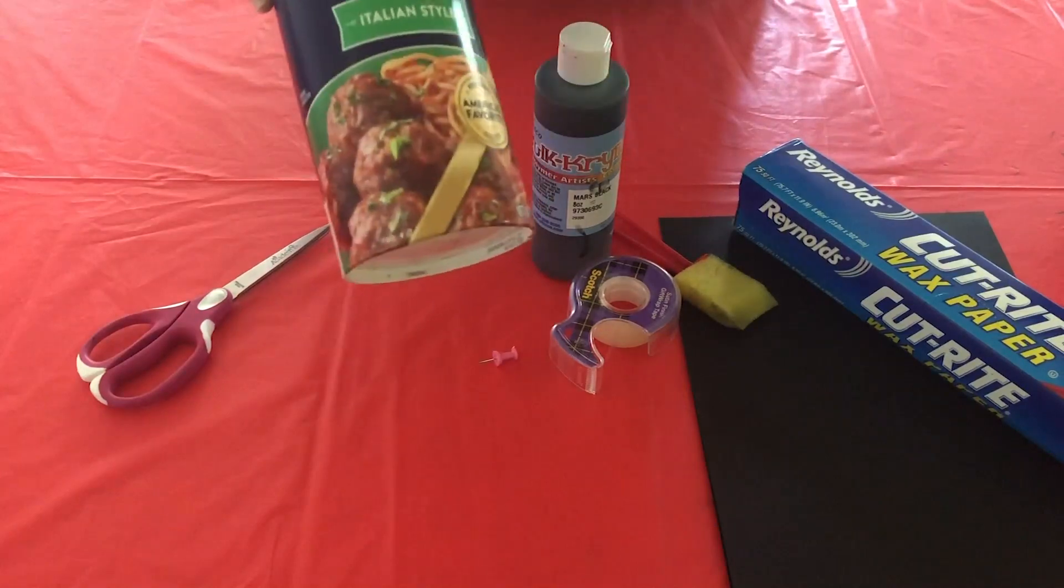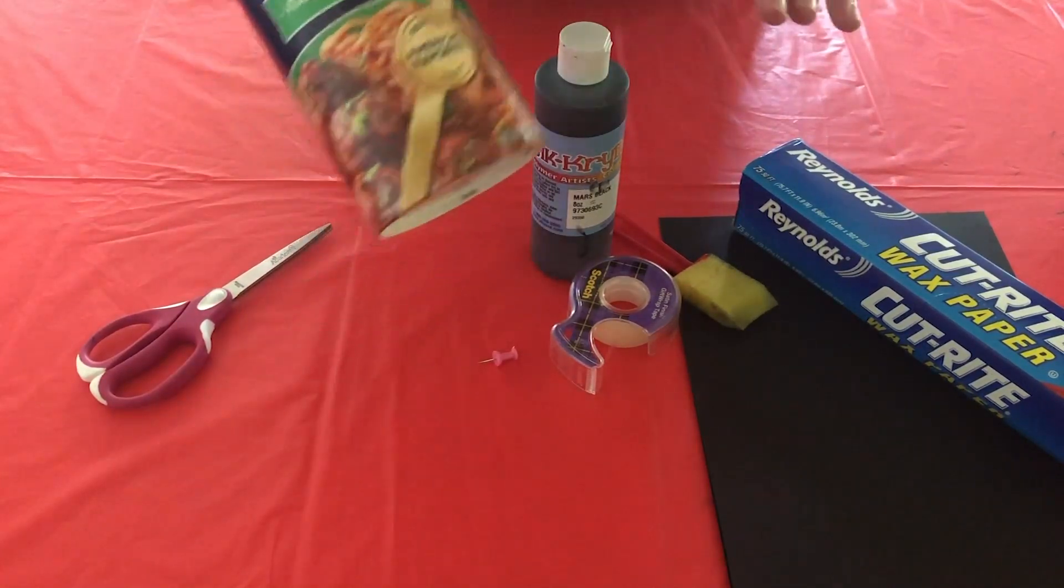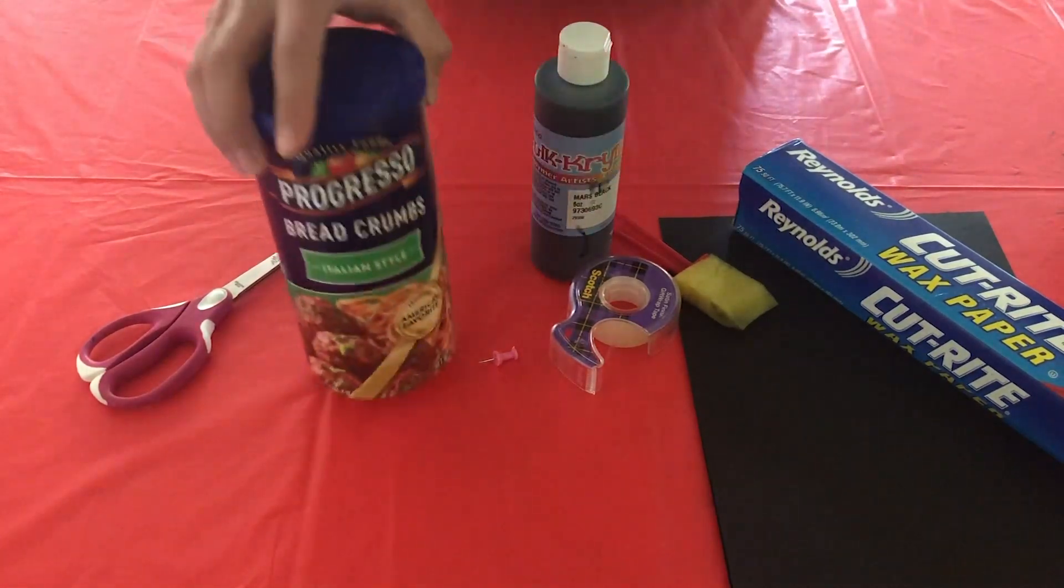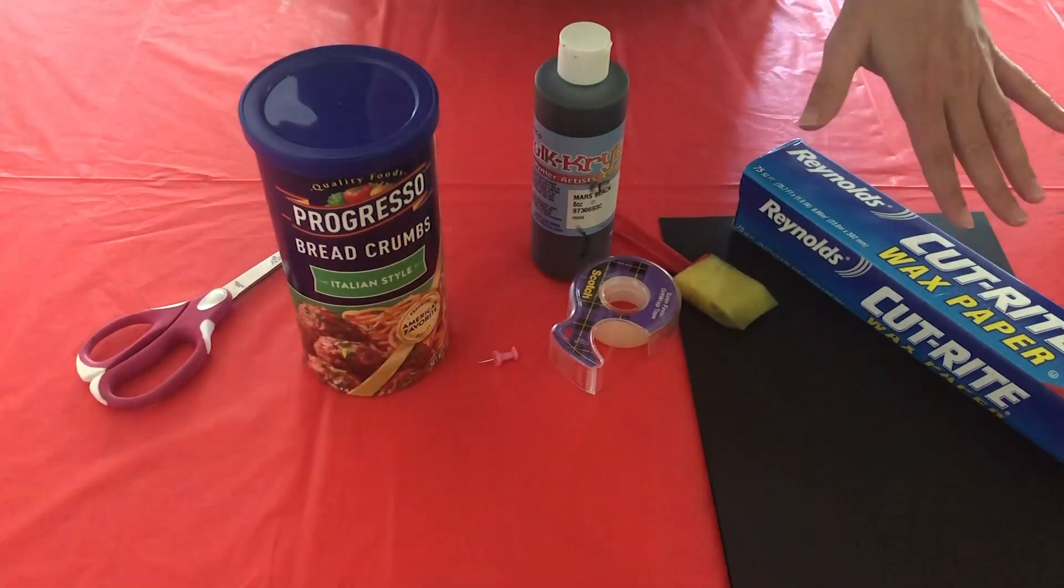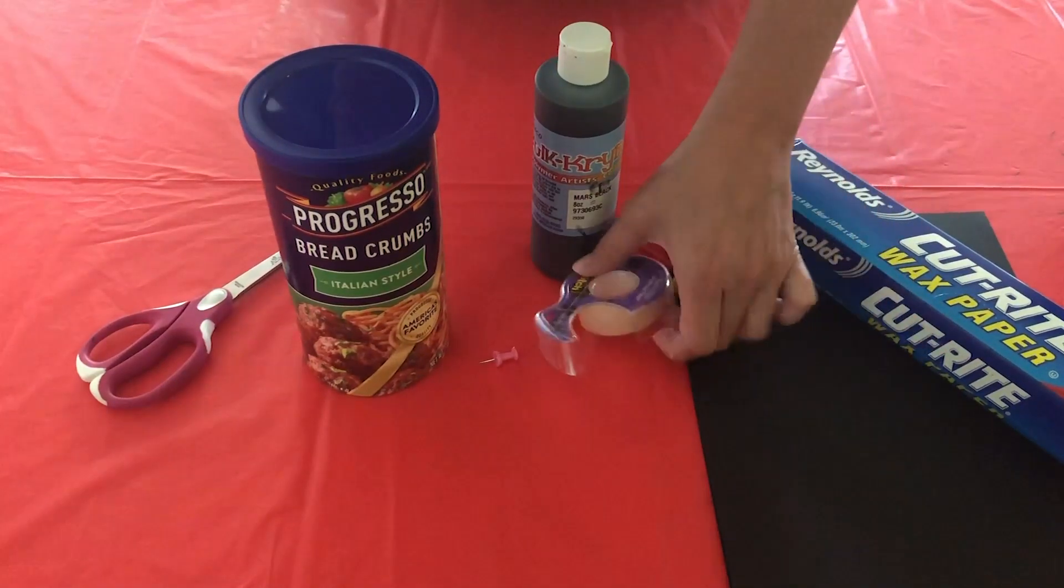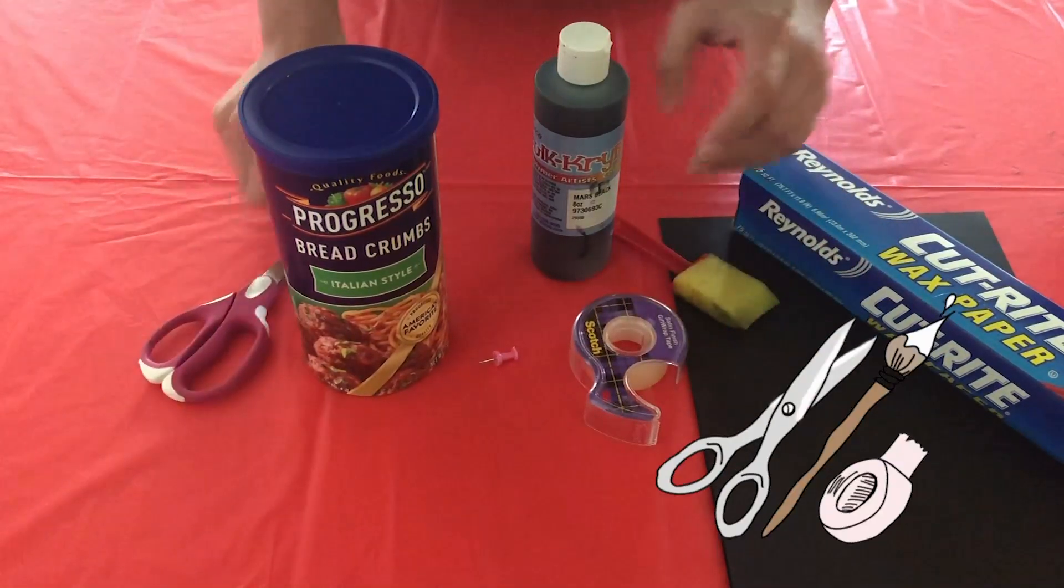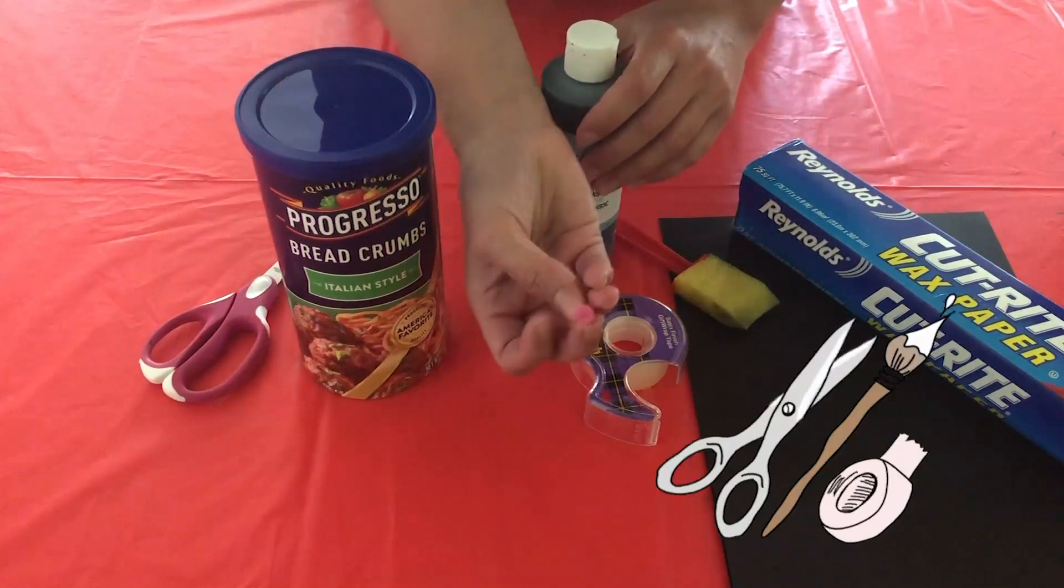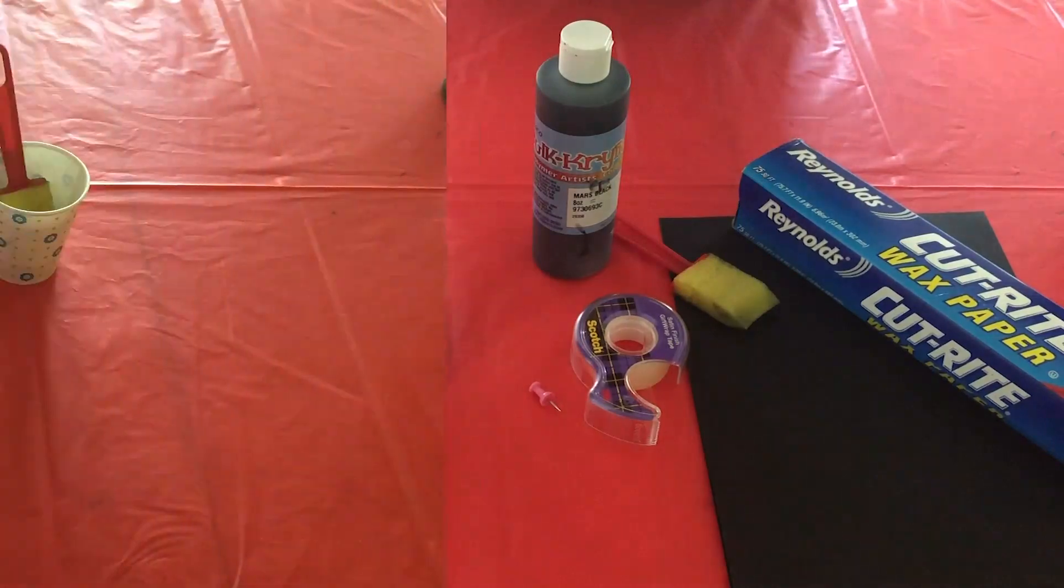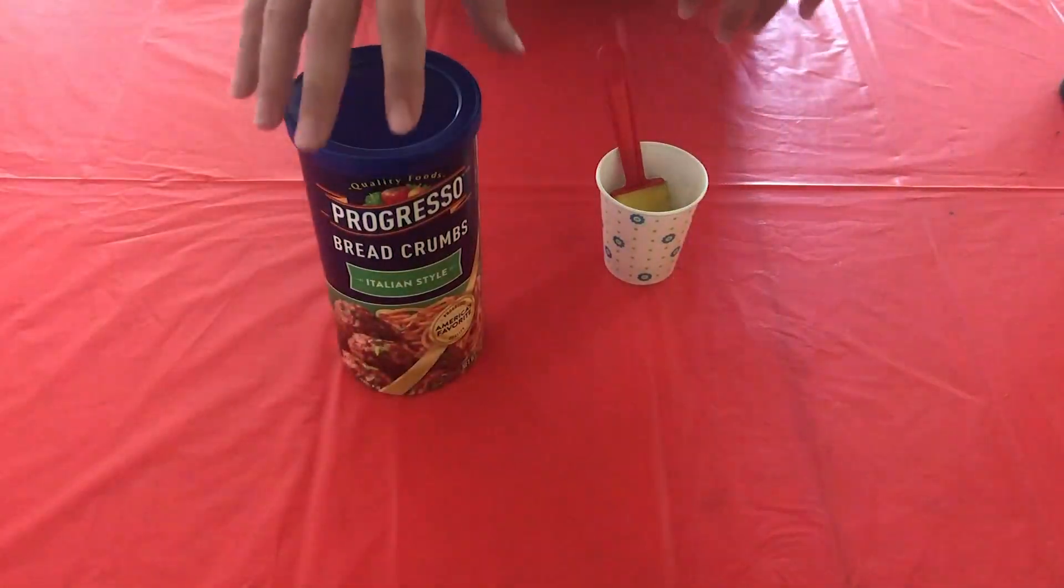But you can use anything - you can use a Pringles container, any kind of cylinder container. Here, what you're gonna need is some wax paper, black construction paper, tape, scissors, black paint, and something to create your hole for the pinhole camera. So let's go ahead and get started.